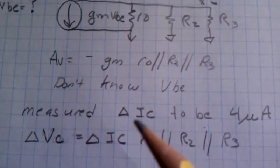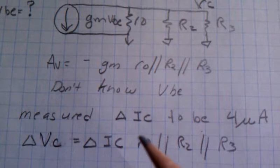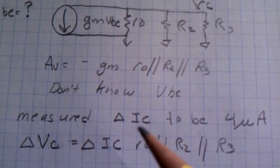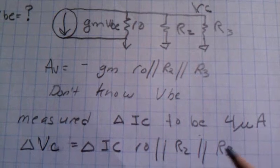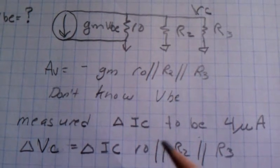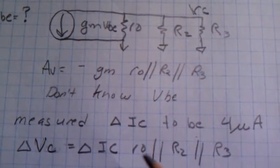What I did was measured a delta IC using a parameter analyzer and found it to be about 4 microamps when the bias current was half a milliamp.